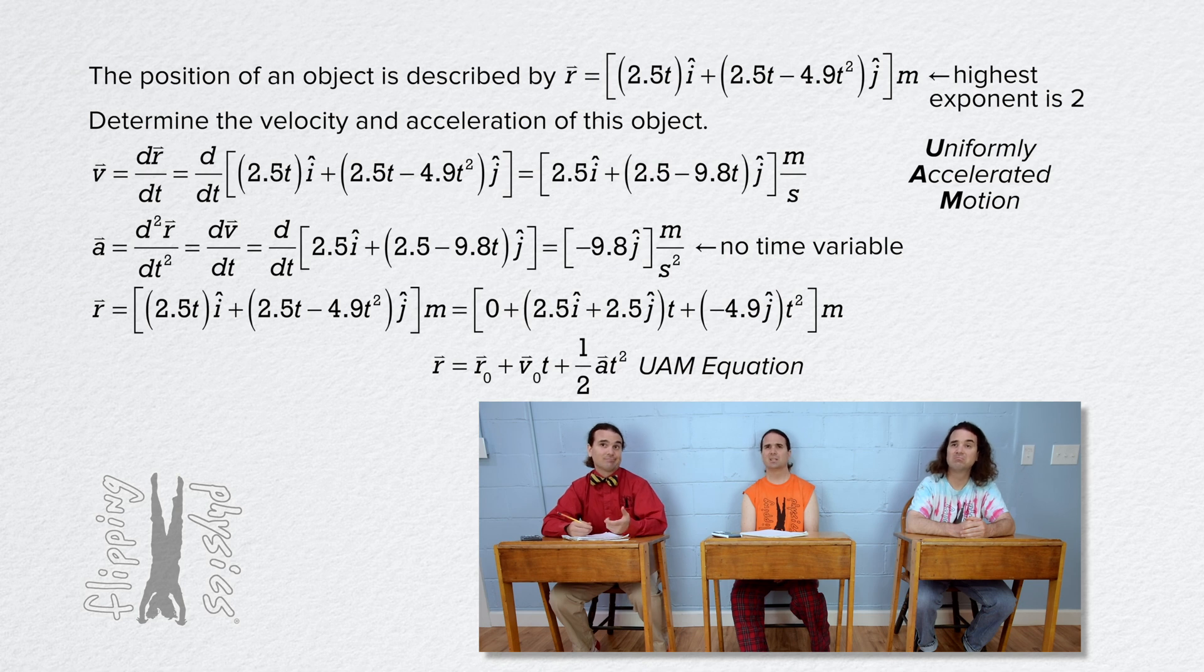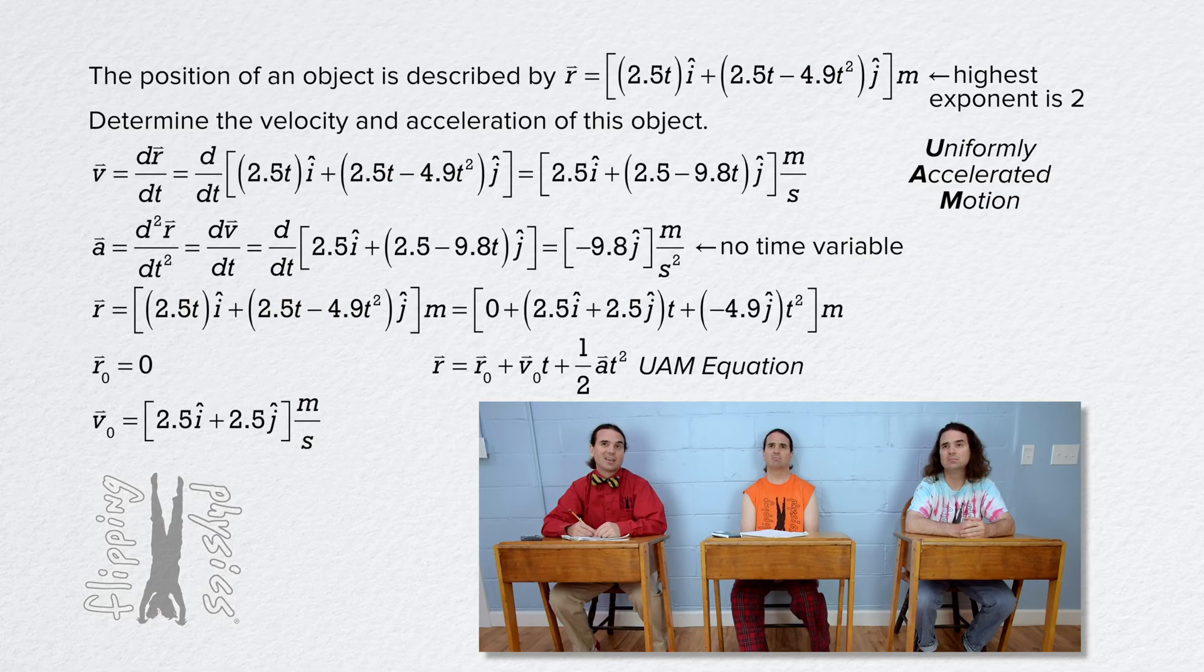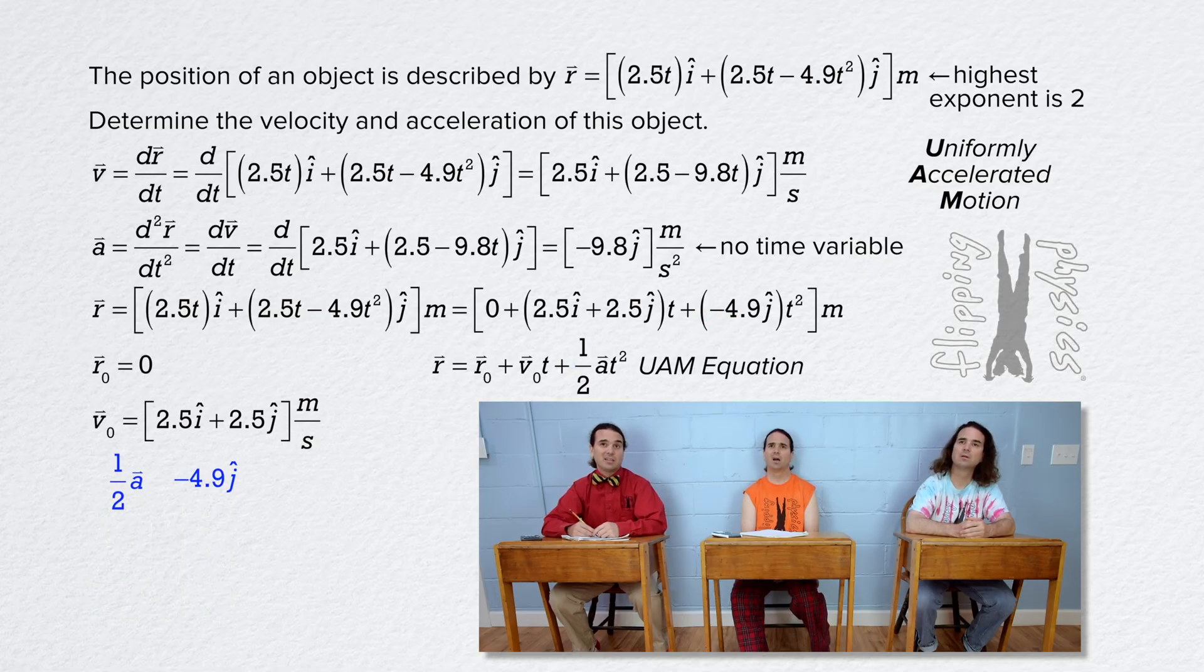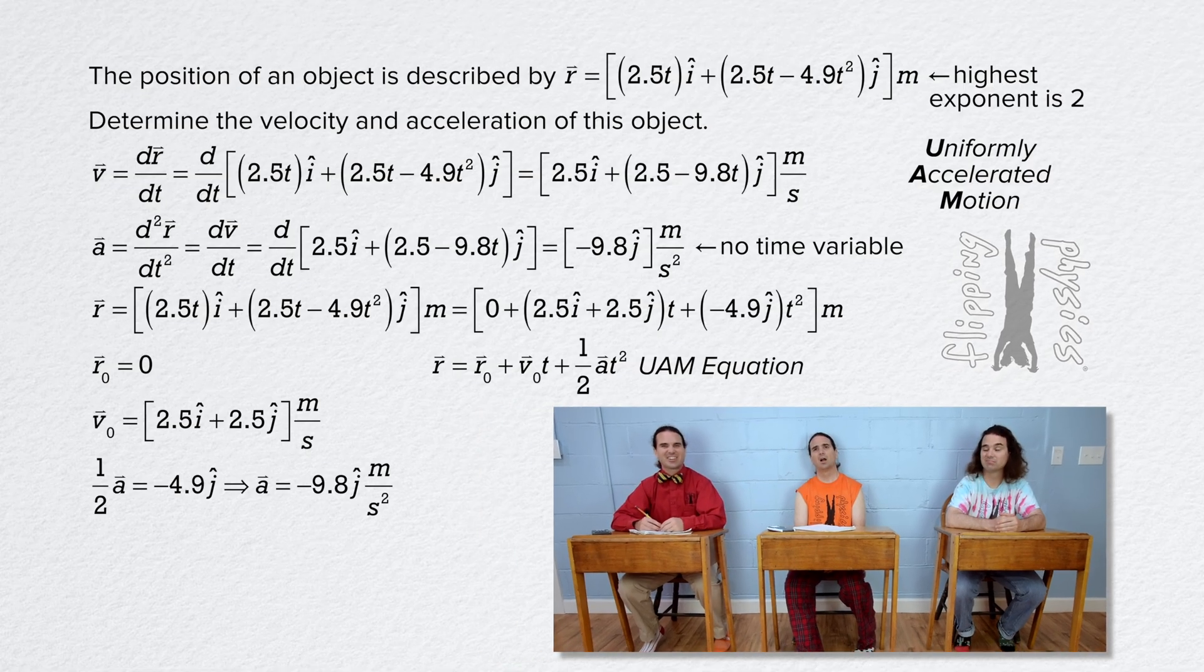Wow. It really is. Then we know the initial position equals 0. And the initial velocity equals 2.5i plus 2.5j meters per second. And we can determine the acceleration to be negative 9.8j meters per second squared just from the R position vector. Cool.